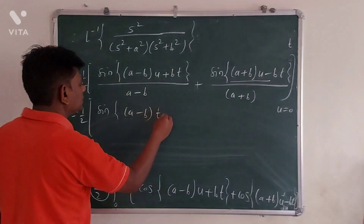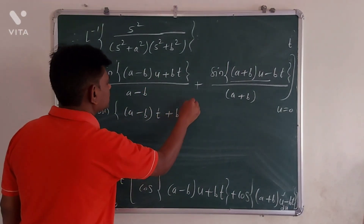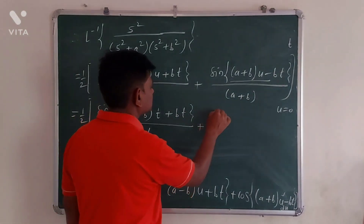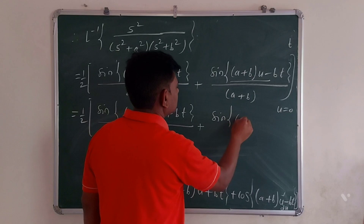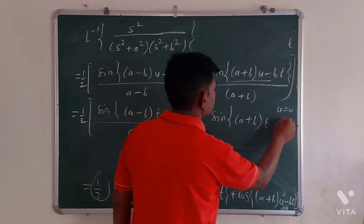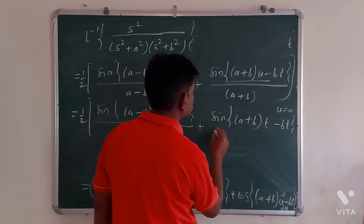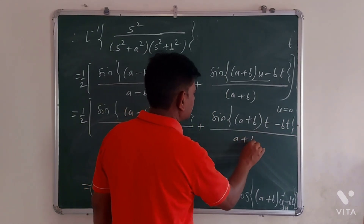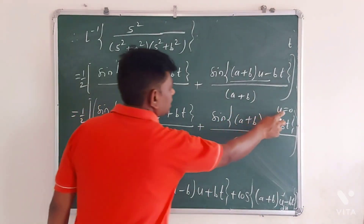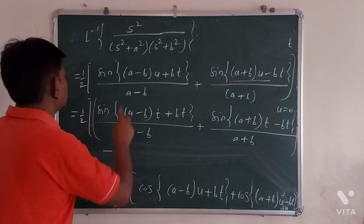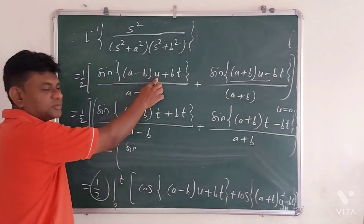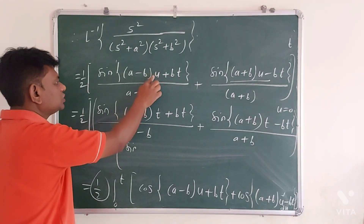At the upper limit u equals t: sin((a minus b)t plus bt) over (a minus b) plus sin((a plus b)t minus bt) over (a plus b). At the lower limit u equals 0: sin(0) equals 0 for both terms. So the lower limit contribution is zero.